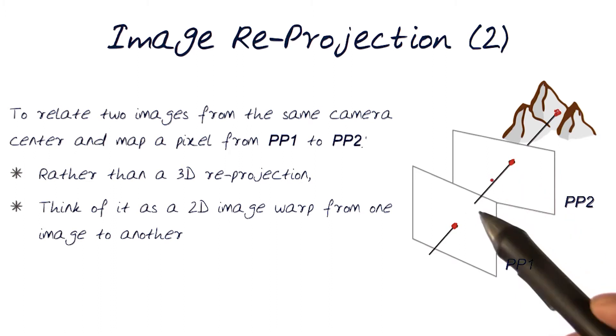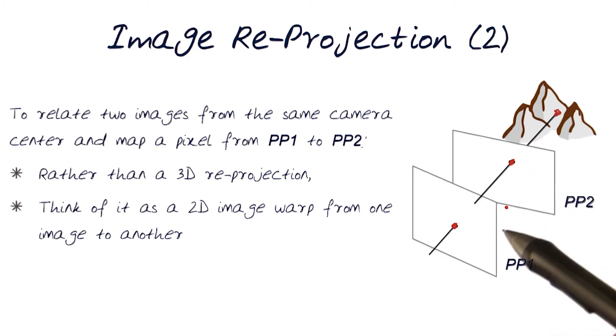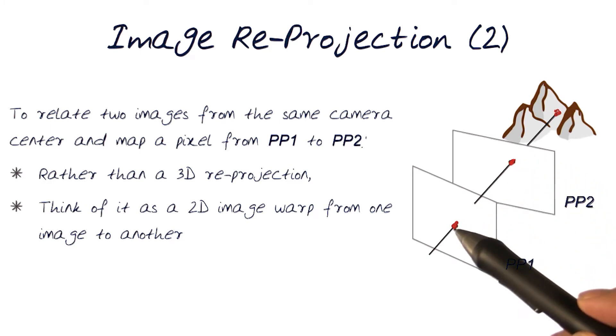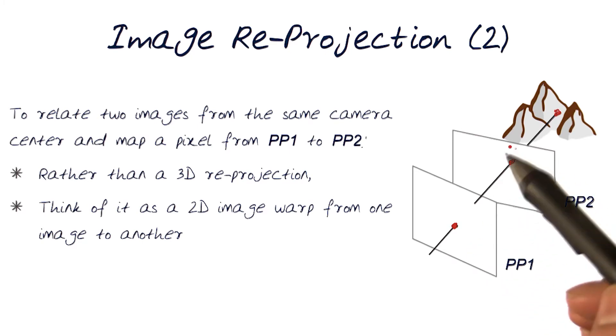What that means is we're going to take these two different projection planes and think about what would be a warp between these two images that will allow us to align these two points, even though these cameras would have moved as I move this to get the mosaic or a panorama. Remember, we're taking multiple pictures of the same scene and we're moving the camera a little bit.